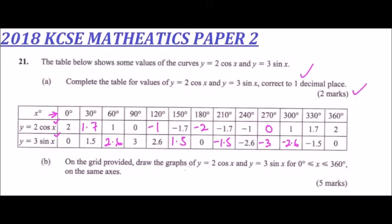On the grid provided, on your paper there is a grid. You can use any other grid for revision. But if you have the past paper itself, you can use that grid on your paper. So on the grid, draw the graphs of y equals 2 cos x and y equals 3 sin x, for the range 0 less than or equal to x less than or equal to 360 on the same axis. So if you are able to draw that, you get yourself 5 marks, which is also not very difficult.